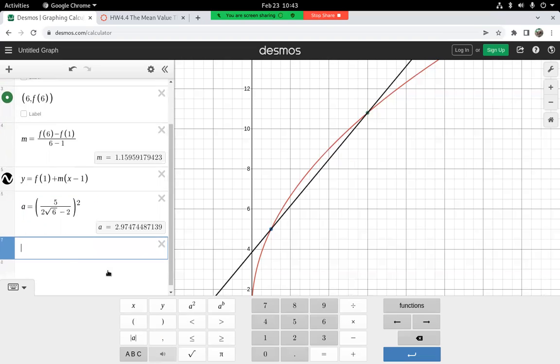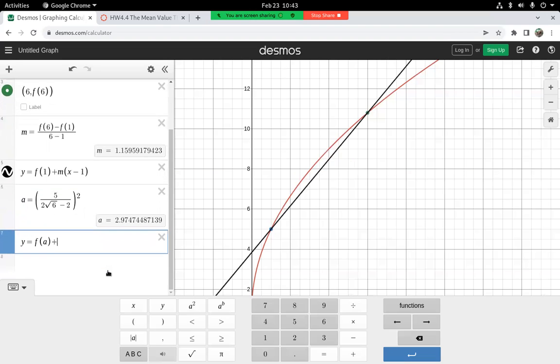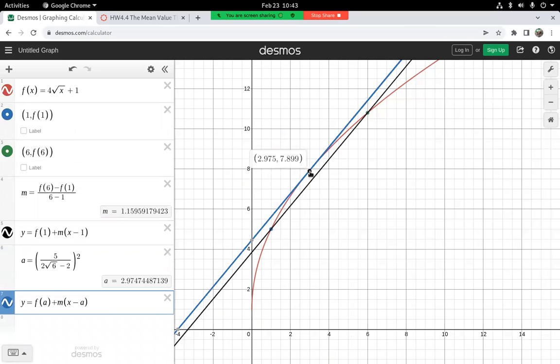So my tangent line ought to be y equals f of that number a above plus my slope is the same slope as between those two lines. So I can just call that m times x minus a.